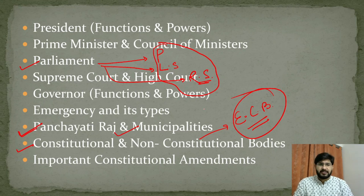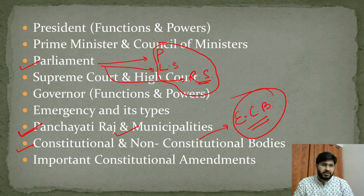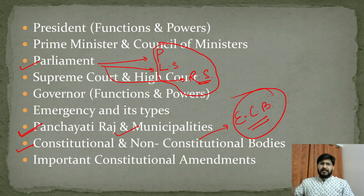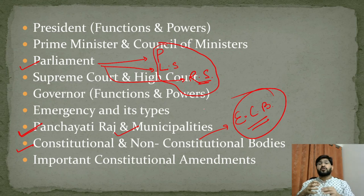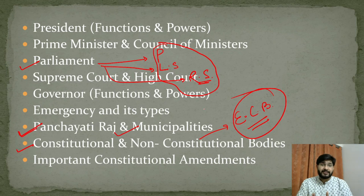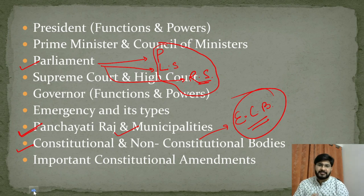The last important topic is Constitutional Amendments. As of 2021, there have been approximately 105 amendments to the Constitution. You don't need to read all of them — around 20 to 25 amendments are the ones from which questions are regularly asked. You need to know the amendment number, the year it was passed, and what it describes or introduced. If you like the content, please spread the word, like the video, and subscribe to the channel. Thank you so much for watching.